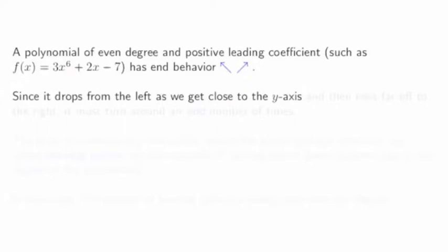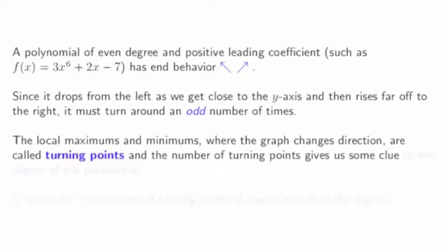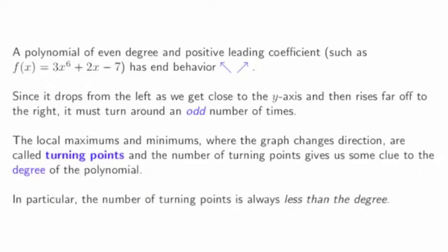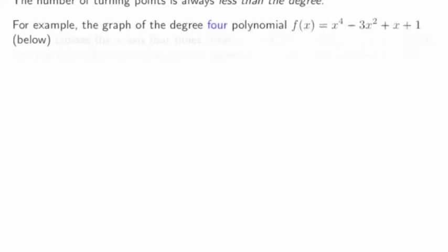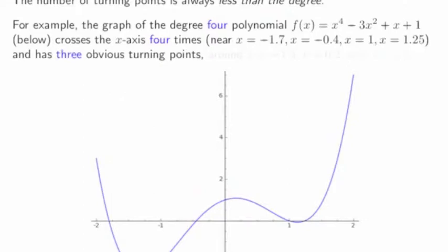A polynomial of even degree and positive leading coefficient has end behavior that shoots up on both sides. Since it drops from the left as we get close to the y-axis and then rises far off to the right, this polynomial has to turn around — in fact, an odd number of times. The local maximums and minimums where the graph changes direction are called turning points, and the number of turning points gives us some clue to the degree of the polynomial. In particular, the number of turning points is always less than the degree. For example, here's a degree 4 polynomial that crosses the x-axis four times, near minus 1.7, minus 0.4, 1, and 1.25, and has three turning points.